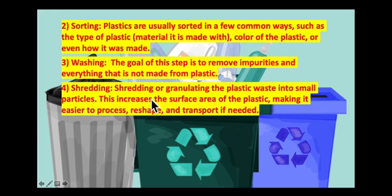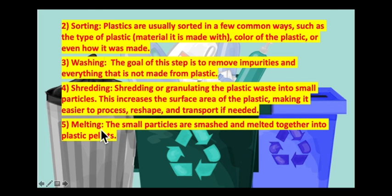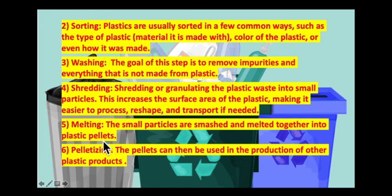The fourth step is shredding or granulating: the plastic waste is converted into small particles. This shredding method increases the surface area of the plastic, making it easier to process, reshape, and transport if needed. The next step is melting: the small particles are smashed and melted together into plastic pallets. The last step is pallet sizing - the most interesting step - because the pallets can be used in the production of other plastic products. This final step decides what shape the plastic is going to be made.